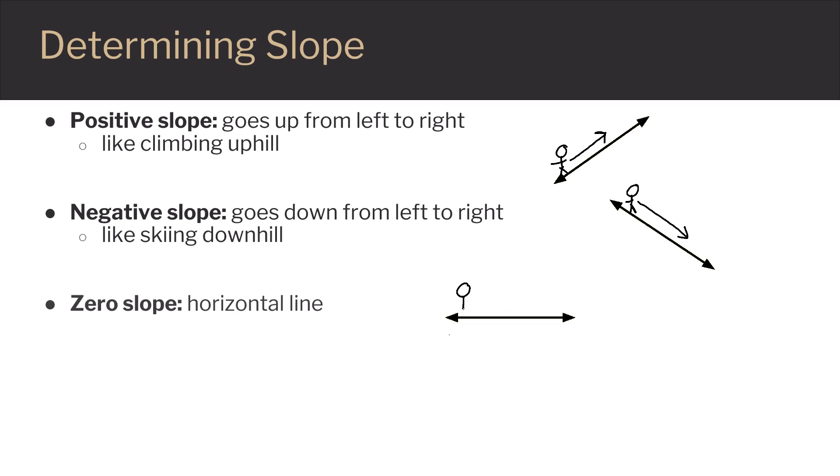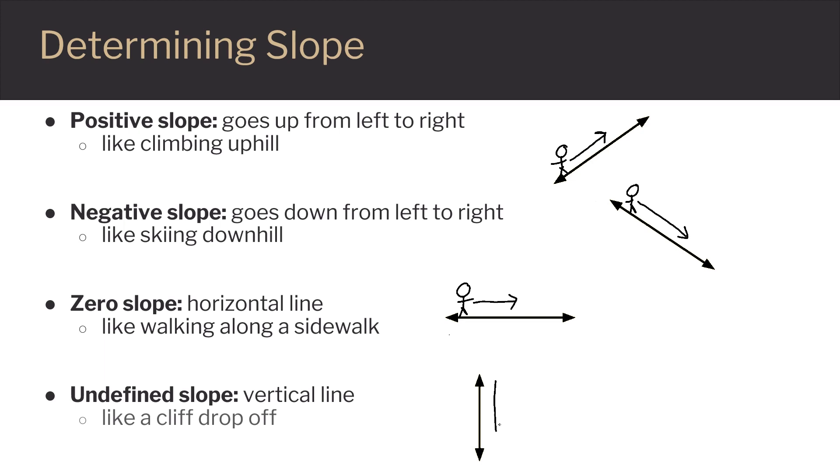Zero slope is a horizontal line, so it's like you're walking along a sidewalk. And undefined slope is a vertical line, straight up and down like a cliff drop-off.